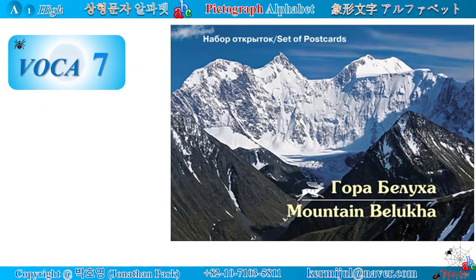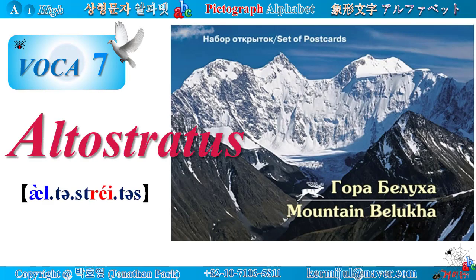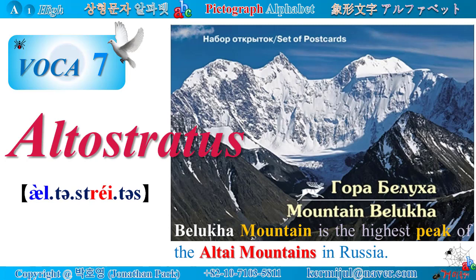Vocabulary number seven: altostratus. Look at the Belukha Mountain — Belukha Mountain is the highest peak of the Altai Mountains in Russia. Look up in the sky above the snow-capped peak of Belukha Mountain — a cloud of altostratus is floating like a feather.